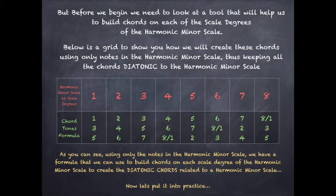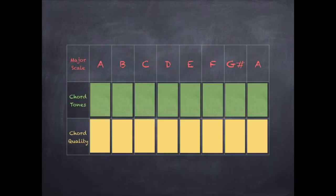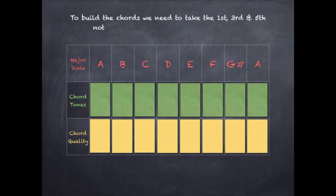On the first scale degree, we will take the first, third, and fifth notes of the scale. On the second scale degree, we will build the chord with the second, fourth, and sixth notes of the scale. On the third scale degree, we will take the third, fifth, and seventh notes of the scale to build the chord, and so on. Now let's put it into practice. To build the chords, we need to take the first, third, and fifth notes of the scale and add them together.